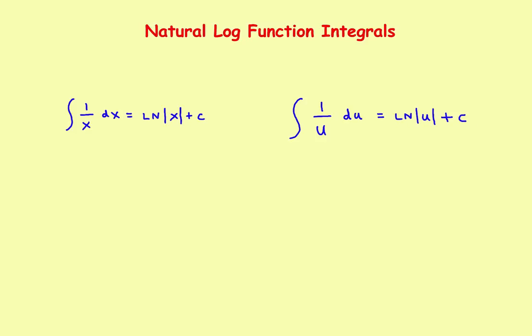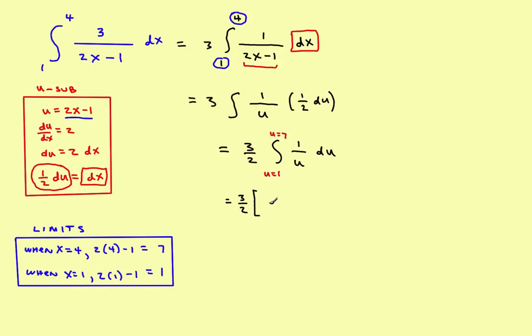So what this is going to be would be the natural log of the absolute value of u, and then we'll evaluate that between 7 and 1.